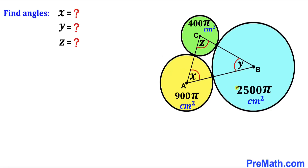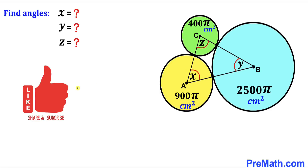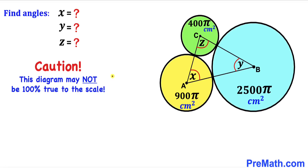Welcome to pre-math. In this video we have three circles that are tangent to each other, where A, B, and C are their centers. The area of the green circle is 400π cm², the area of the yellow circle is 900π cm², and the area of the blue circle is 2500π cm². We form triangle ABC by connecting centers A, B, and C, and we need to calculate angles X, Y, and Z. Note this figure may not be 100% true to scale.